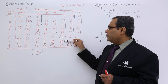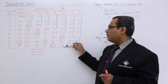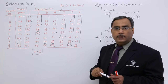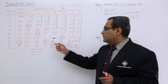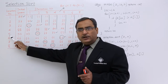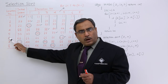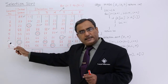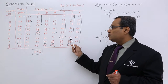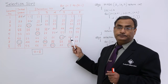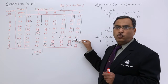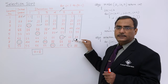Now, what is the minimum data location number from 6 to 8? It is 6. If 6 is equal to the lower bound 6 — yes — that means I need no swapping. So the array has been sorted up to this limit, locations 1 to 6.